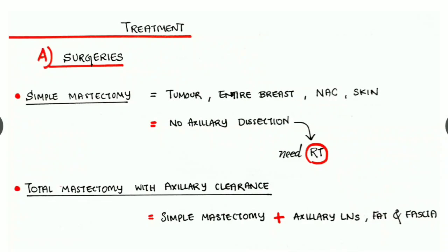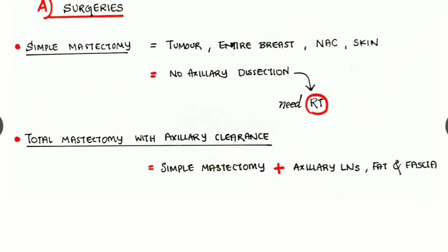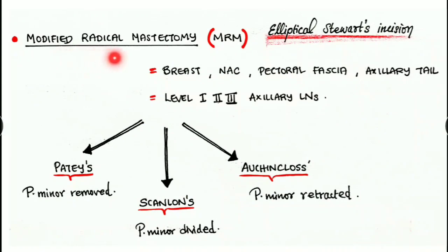Next we have to look at the treatment. First and foremost, the important treatment is surgery. It includes simple mastectomy where the tumor and even the entire breast with nipple areola complex and the skin are removed. There is no axillary dissection, and hence we need to give radiotherapy. Next is total mastectomy with axillary clearance - here it is simple mastectomy with removal of the axillary lymph nodes, axillary fat, and the fascia. Next is modified radical mastectomy MRM. The incision is elliptical Stewart incision. Here the breast, nipple areola complex, pectoral fascia, and axillary tail with level 1, 2, and 3 axillary lymph nodes are being removed.